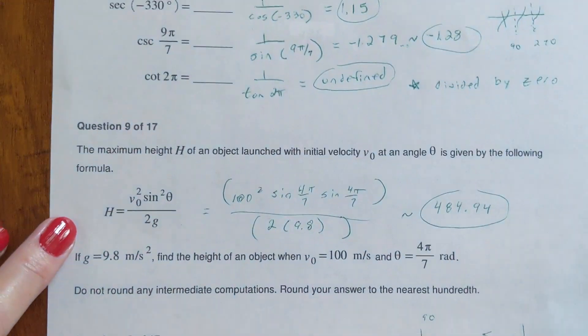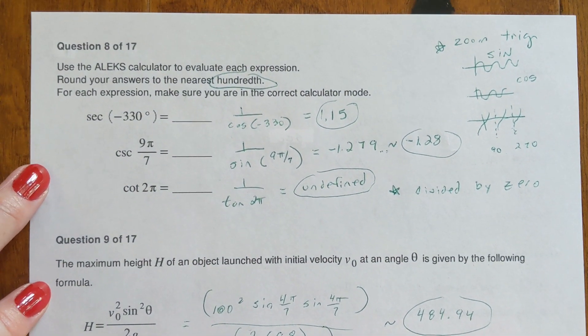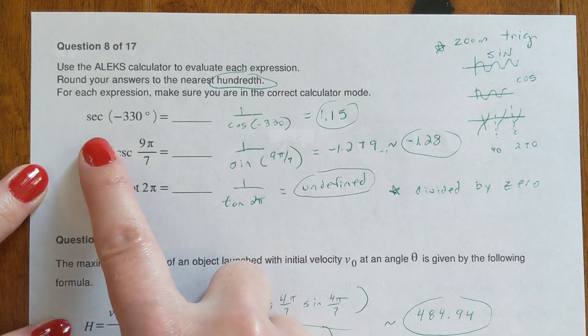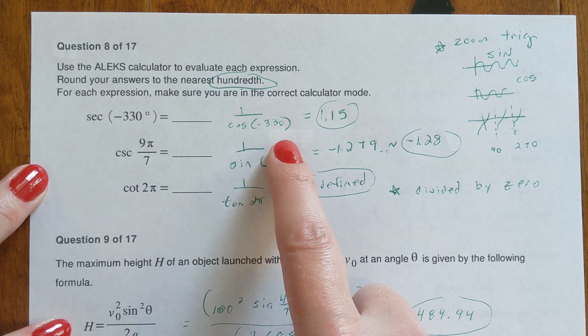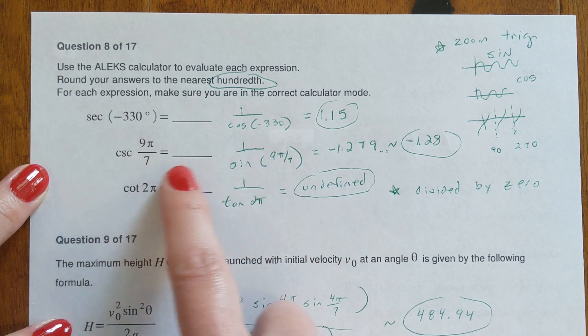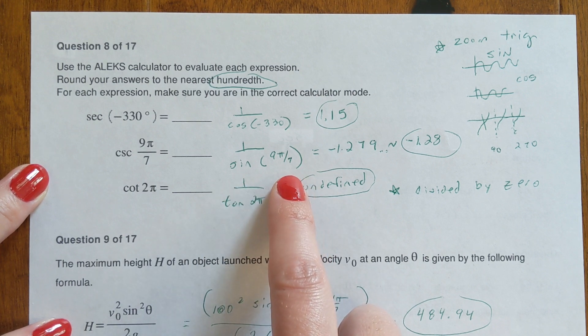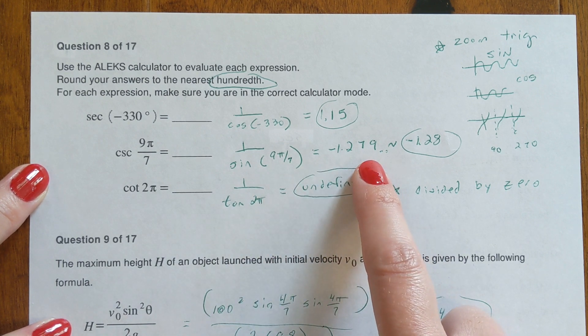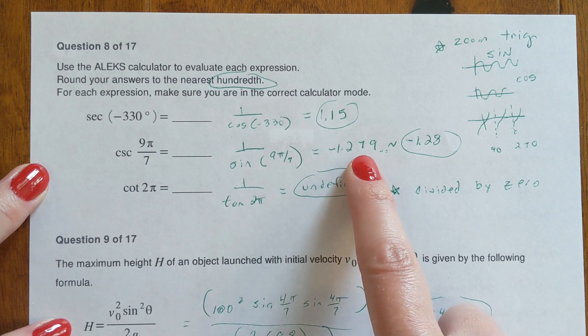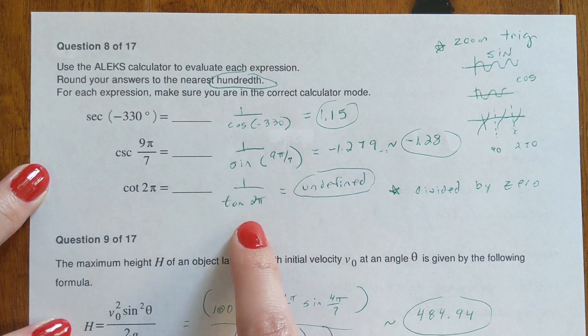Same thing down here, just put that in your calculator. You could change it to radians or change it to degrees. As degrees it's 112.5, so you're going to do the sine of negative 112.5 and see which one matches it. Number eight on your homework - these are things you could just put in your calculator. Secant is cosine, so you're going to change it to one divided by the cosine of negative 330. Cosecant is sine, so one divided by the sine of 9 pi over 7. You could change your calculator to radians, or put 180 in for pi.